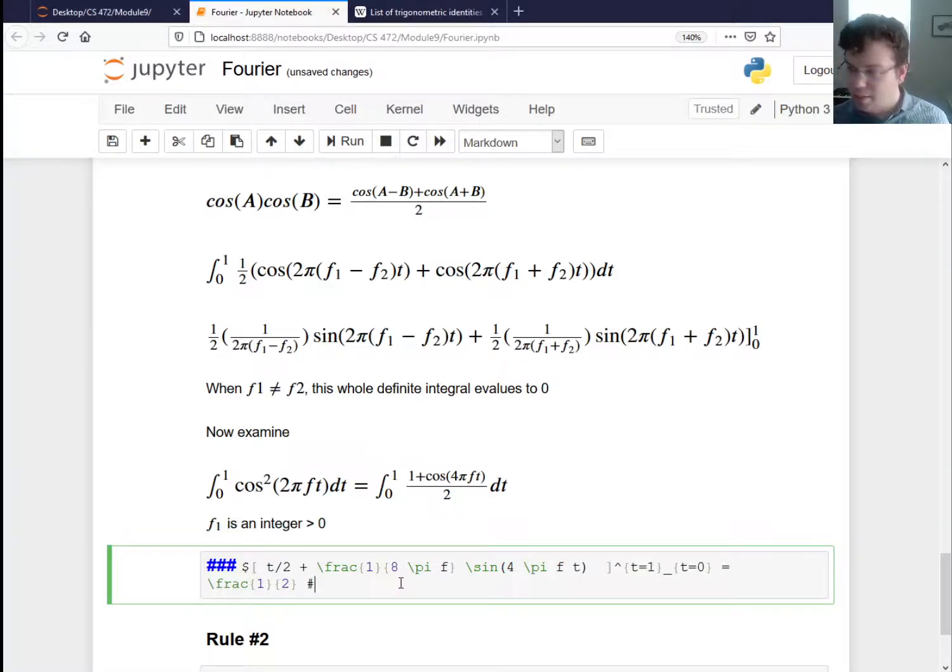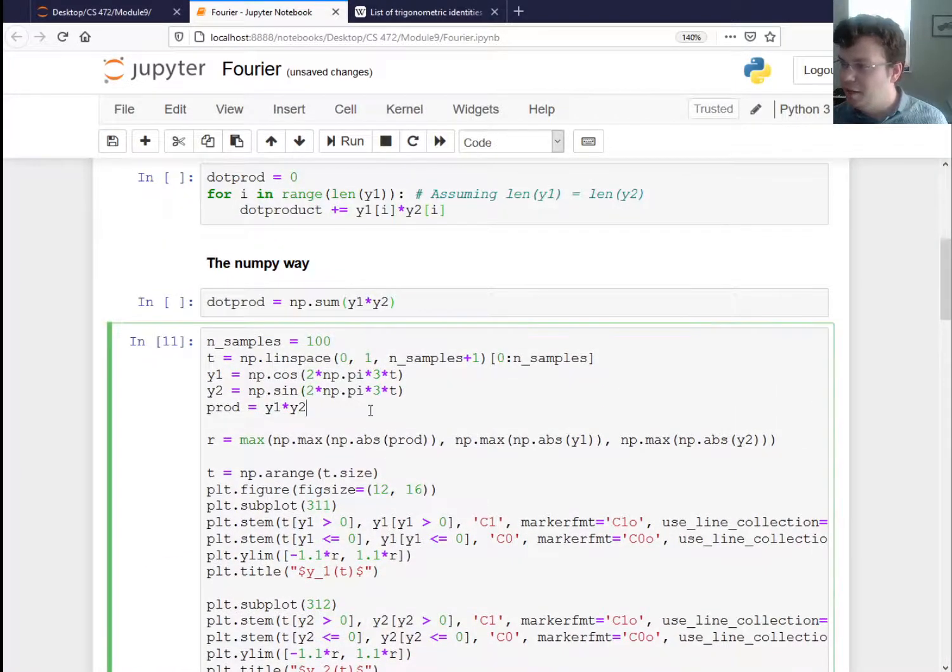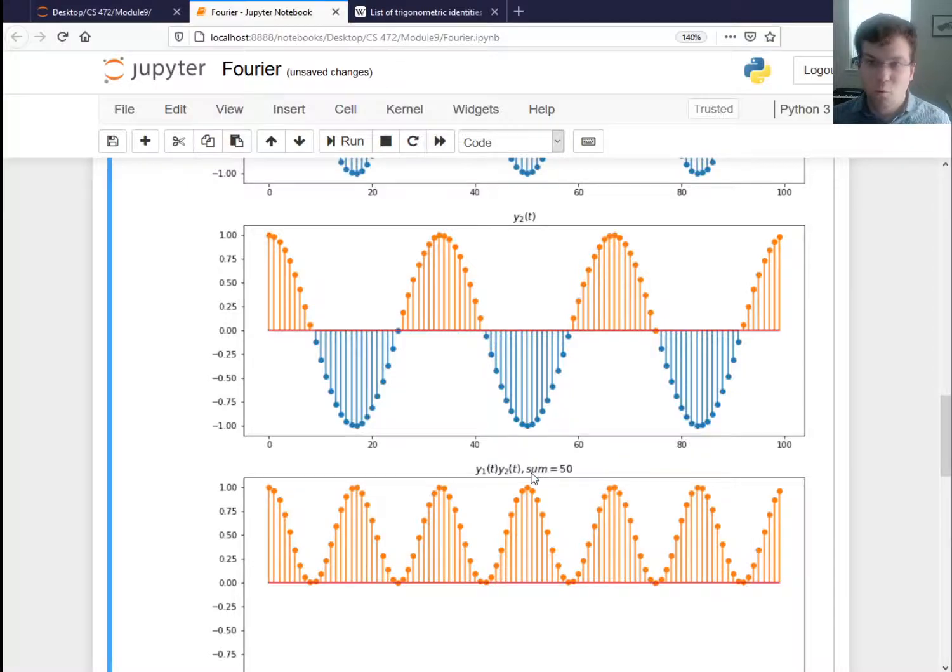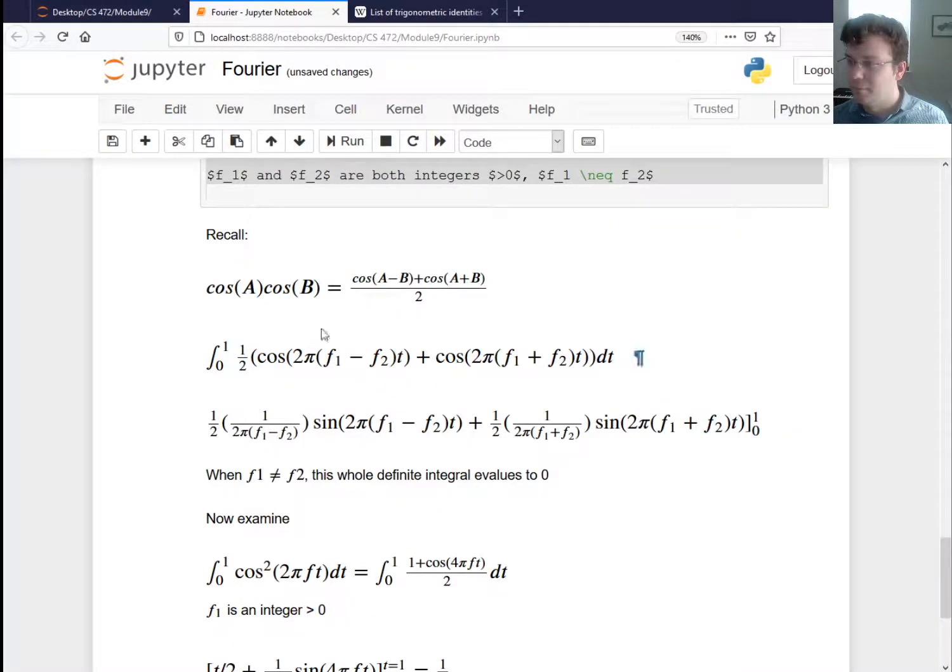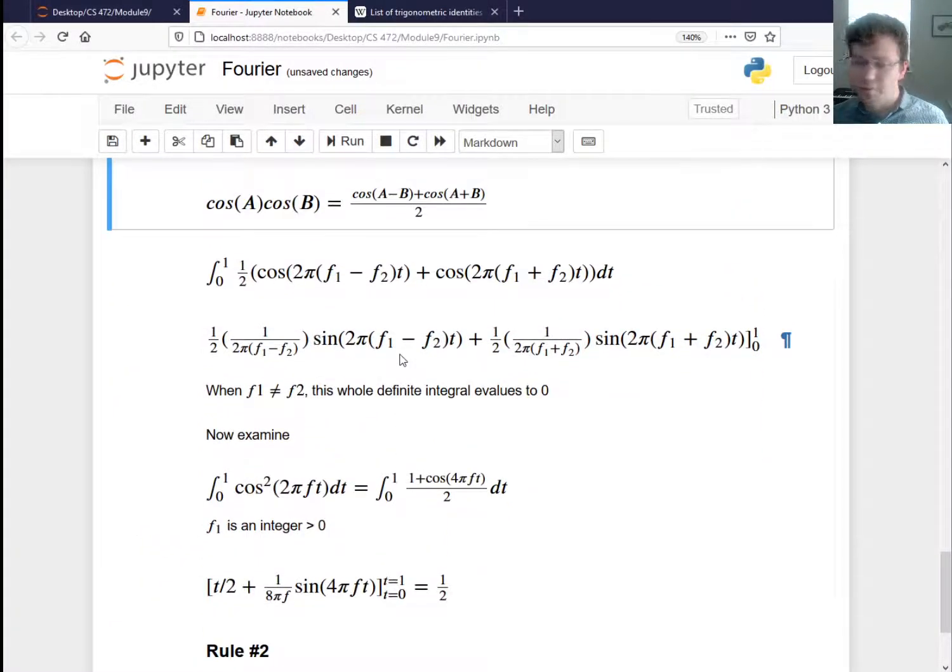So maybe this now kind of explains why when we looked at these sums, if we had two cosines that were the same number, we always ended up with a sum which was one half of the total number of samples. So maybe that's starting to make sense now. All right. So I just wanted to go through some stuff that you might've seen before. So let me, I'm going to let that all sink in. So just take a moment. And then I want to talk about the last rule here.